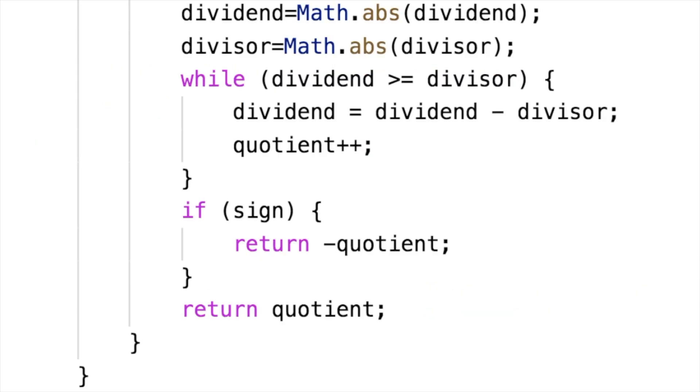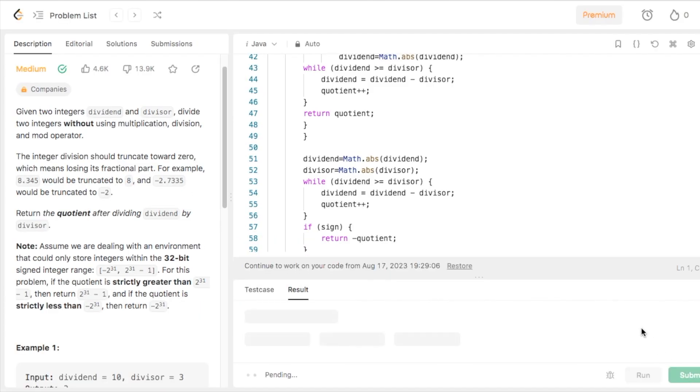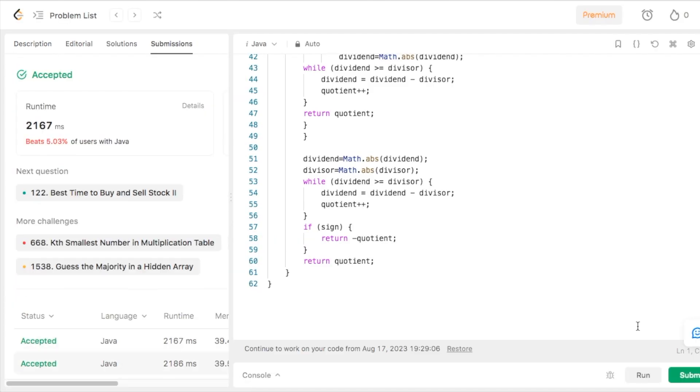Now that we've done this, we can come down here to our subtraction part. When we return the quotient, we just add an if statement that checks if the variable sign is true, and if it is, it will return a negative quotient. Otherwise, we just return quotient as positive. And if we submit this program, we can see that it works. If you have any questions, please let me know in the comment section below. Otherwise, goodbye!